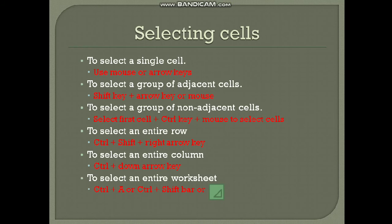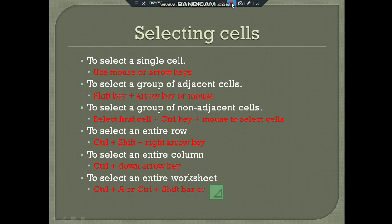To select a group of non-adjacent cells, you select using the Ctrl key while clicking. To select an entire row, you click on the row header. To select an entire column, you click on the column header. Finally, to select the entire worksheet, you can use Ctrl+A or Ctrl+Shift+Space, or click the small box in the top left corner of the worksheet.